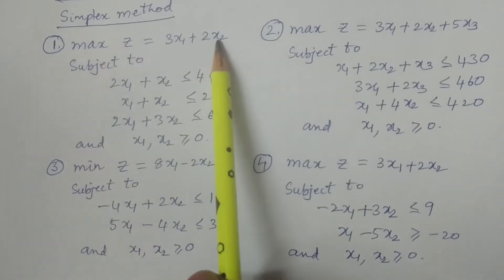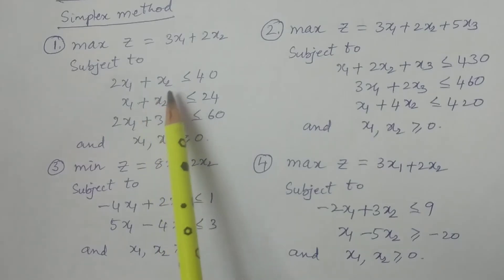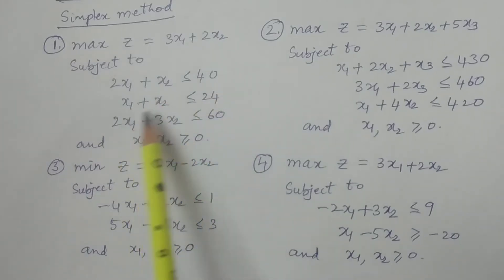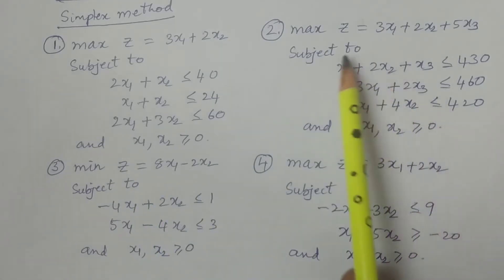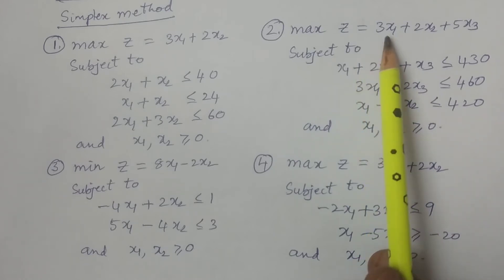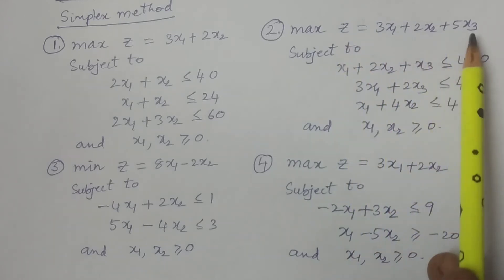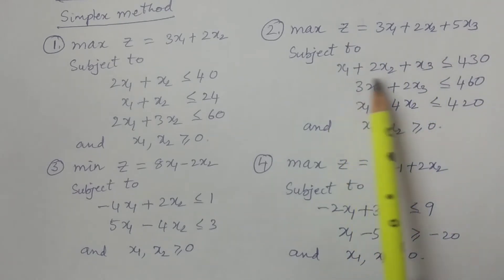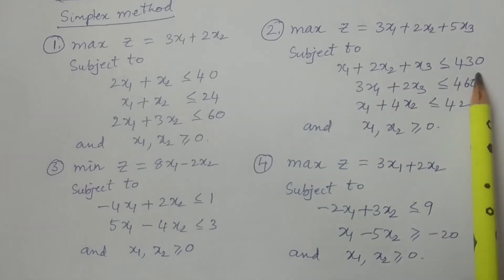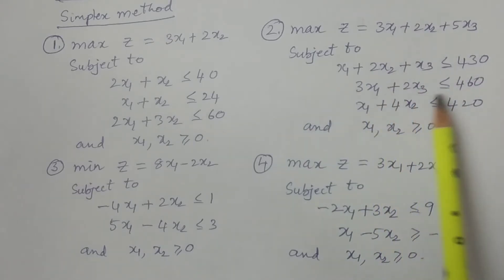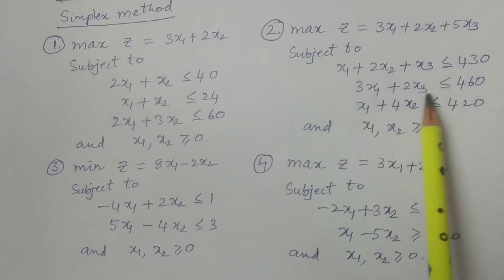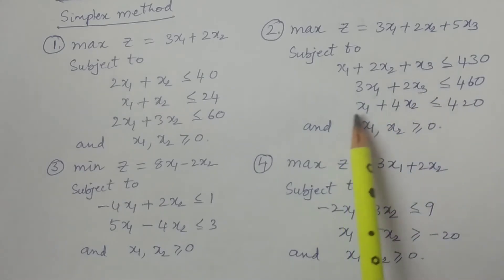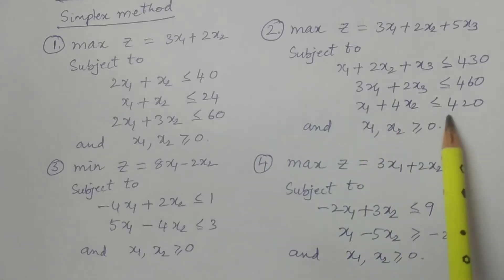Problem 1: maximize z = 3x1 + 2x2, subject to 2x1 + x2 ≤ 40, x1 + x2 ≤ 24, 2x1 + 3x2 ≤ 60. Problem 2: maximize z = 3x1 + 2x2 + 5x3, subject to x1 + 2x2 + x3 ≤ 430, 3x1 + 2x3 ≤ 460 — note the variables here are x1 and x3, and x1 + 4x2 ≤ 420.